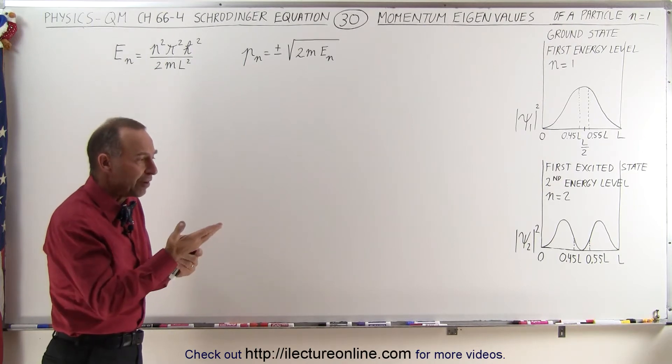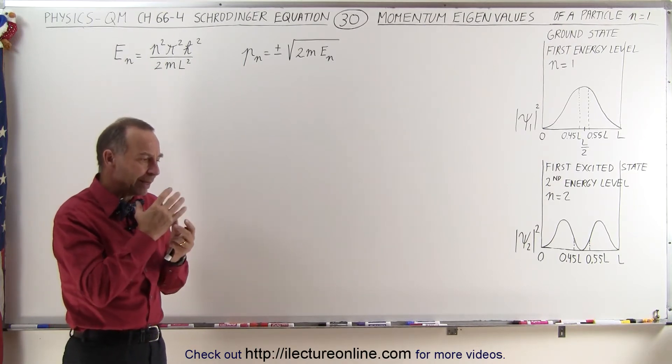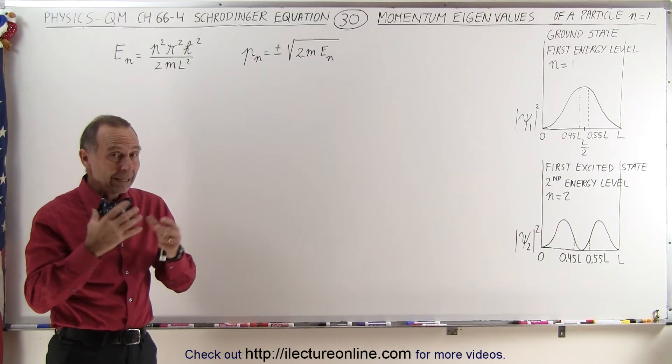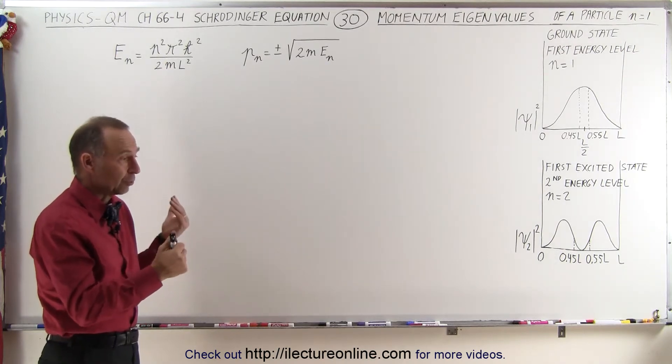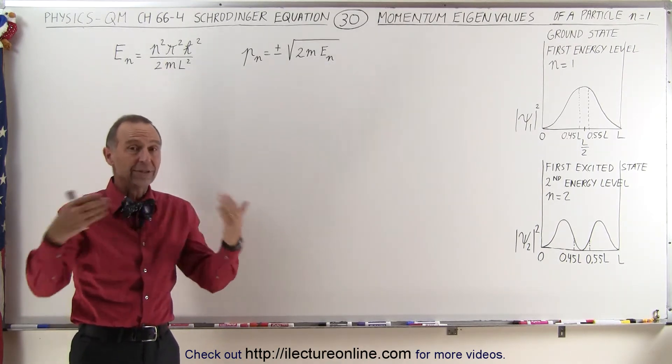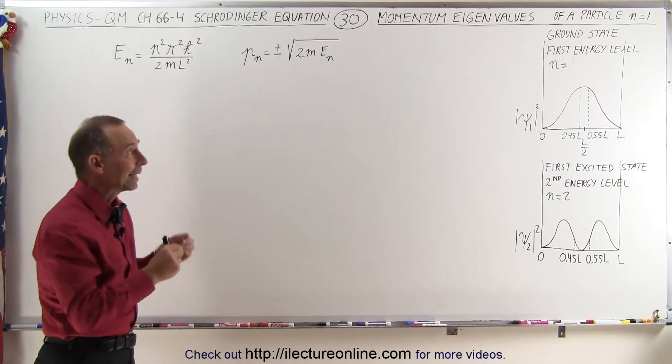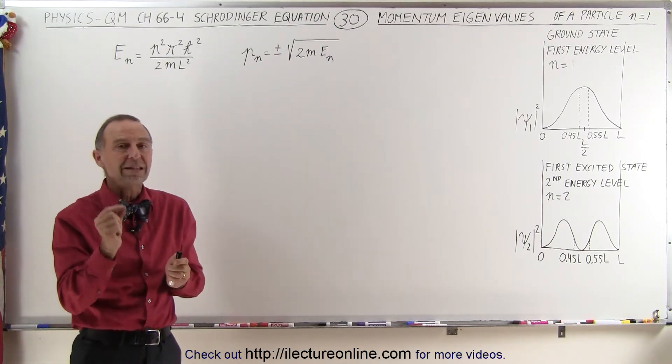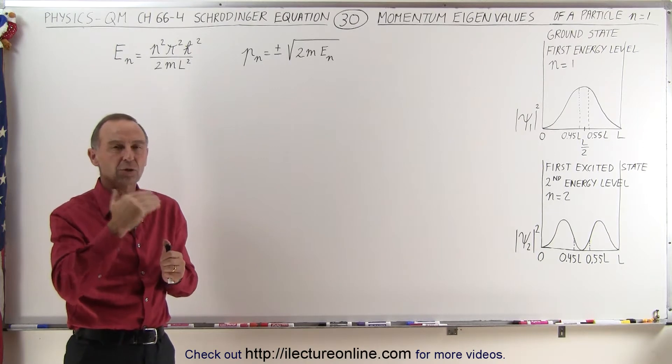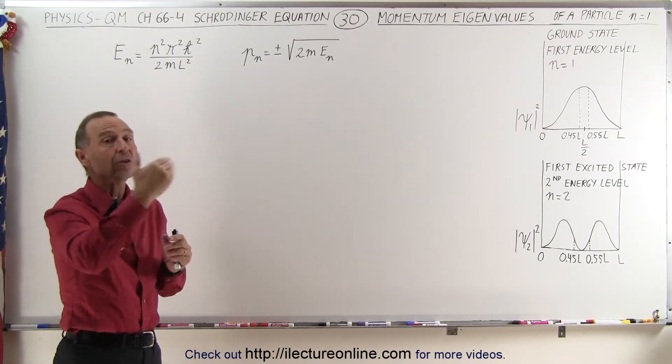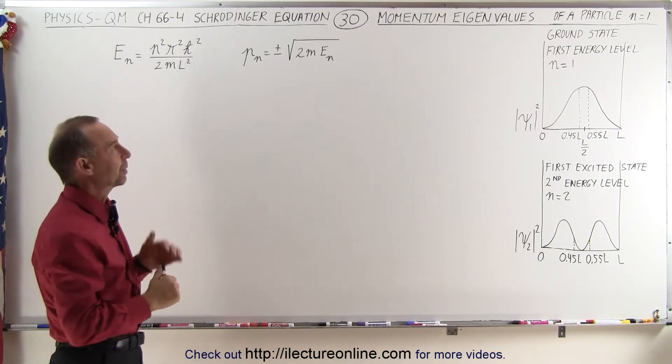So since we found that the expectation value for the momentum ended up being equal to zero because we had momentum going to the right, momentum going to the left, and we took the average value, we get zero. At least in this case we should be able to find the individual values for the momentum going to the right and going to the left, and that will compare it to the expectation value.